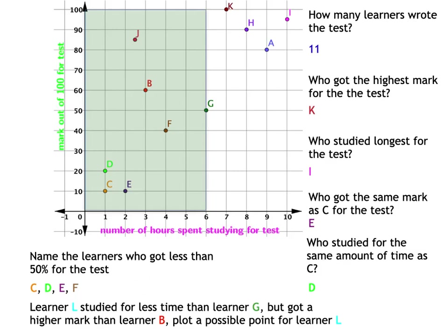If you've got a higher mark than learner B, you have to be above the mark for learner B, in that red area. Now, learner L has to be in the green area as well as the red area, so learner L could be anywhere in the overlap between those two areas.